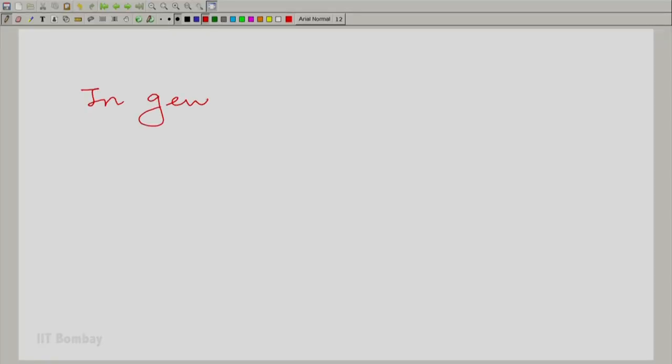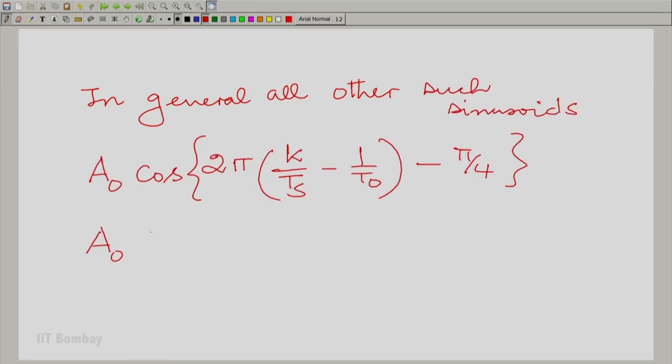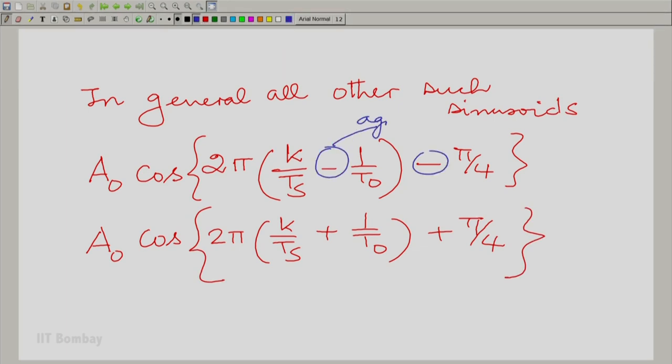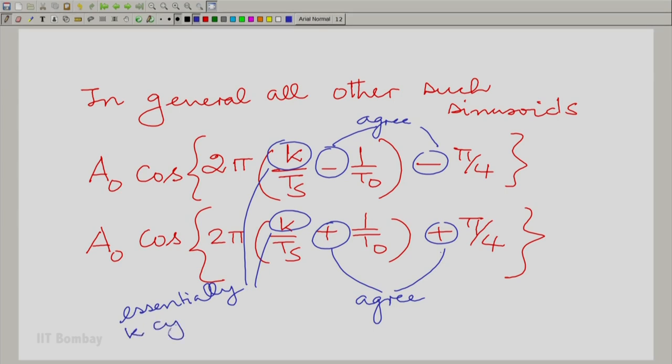Now, it is not difficult to generalize to losing more than one cycle or almost losing more than one cycle. In general, all the other sinusoids which have the same samples at the same points are as follows. Let us write them down. These are the expressions. So, we have these two signs are green and so also these two signs and you essentially have k cycles. Now, it is interesting that all these sinusoids have the same samples at the same points and it is also interesting that all these different cases lose different numbers of cycles.